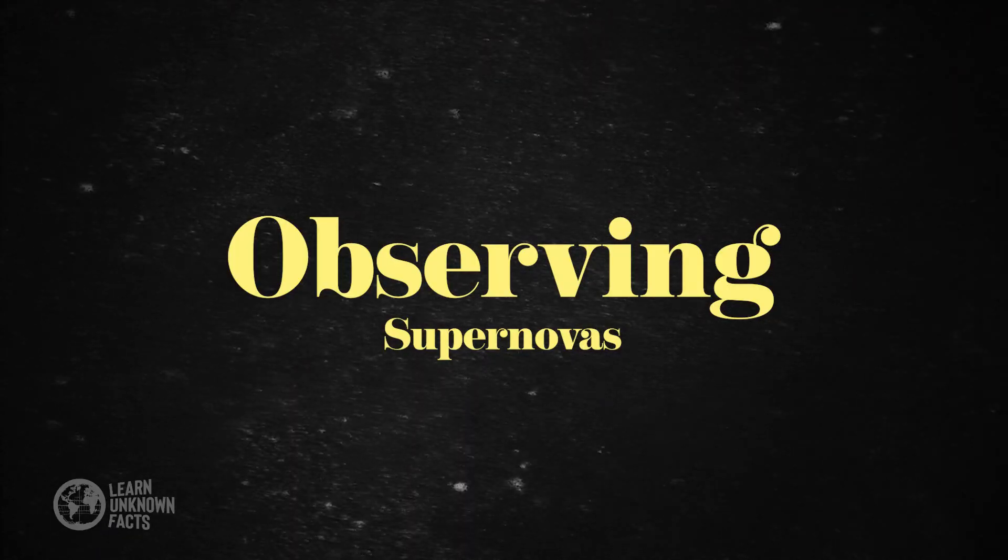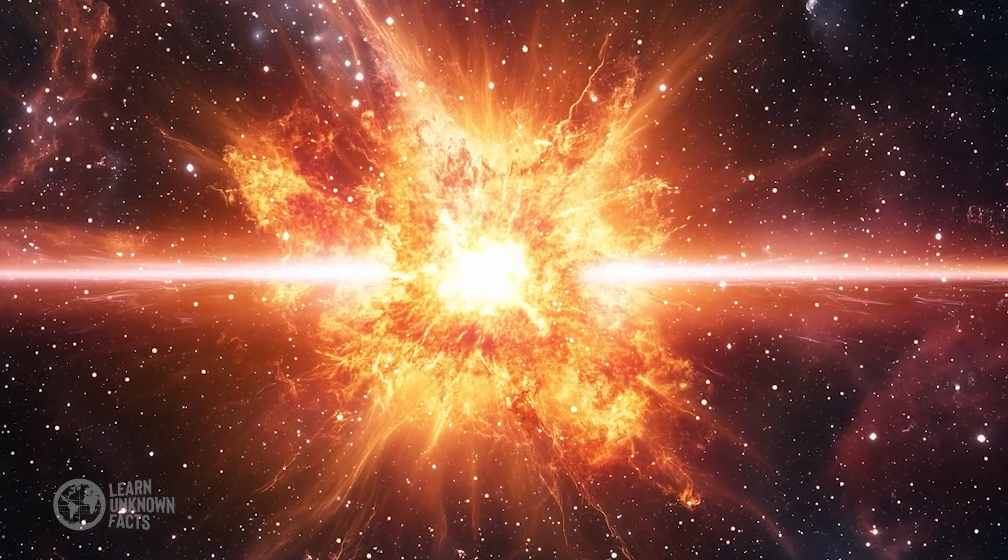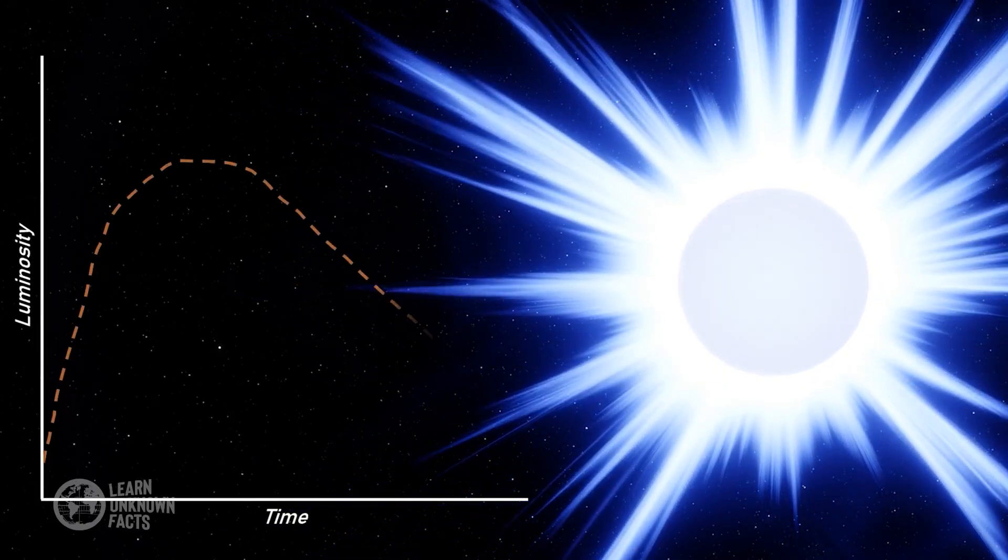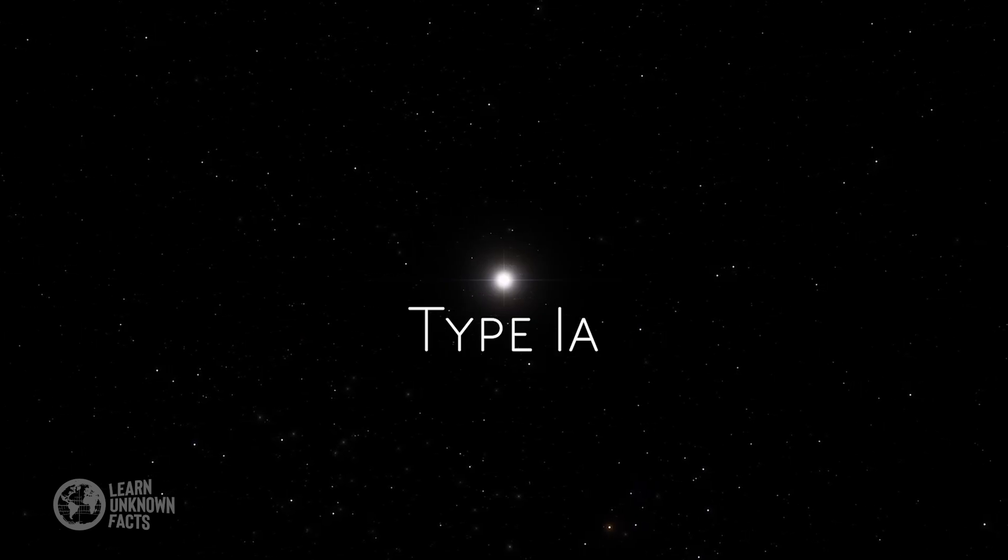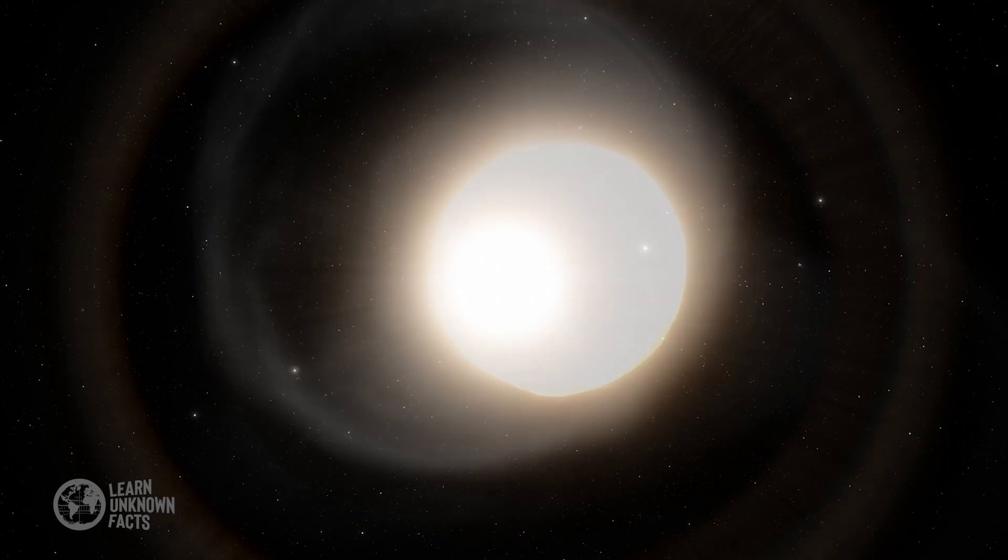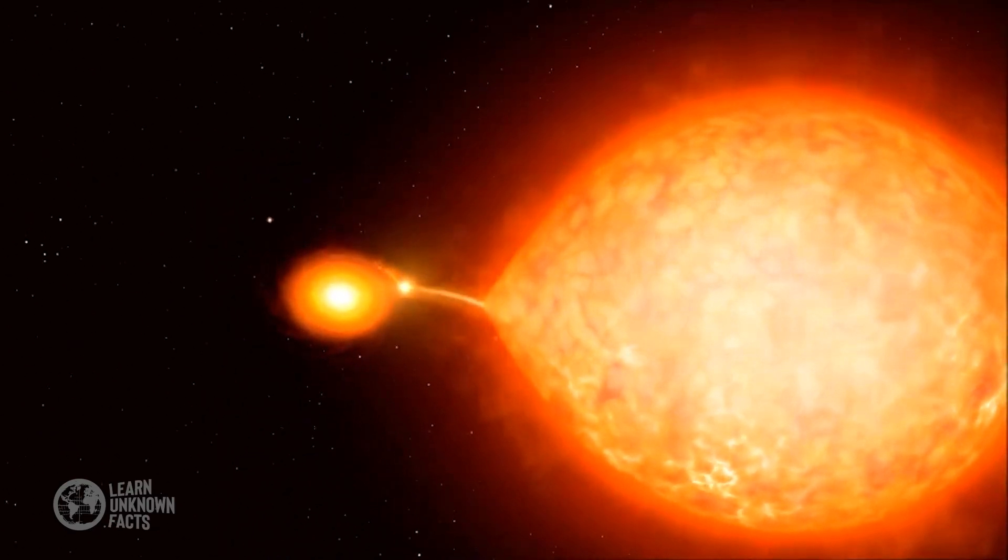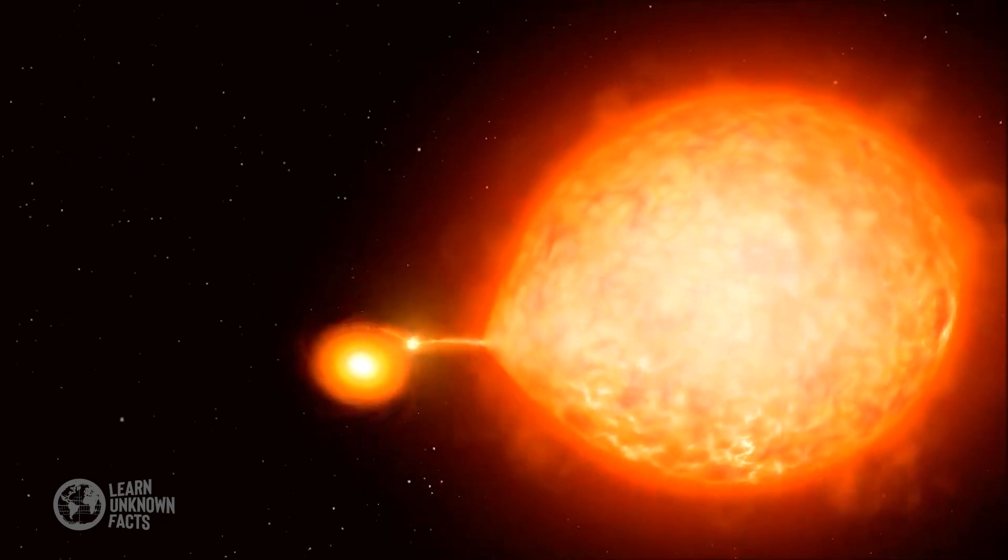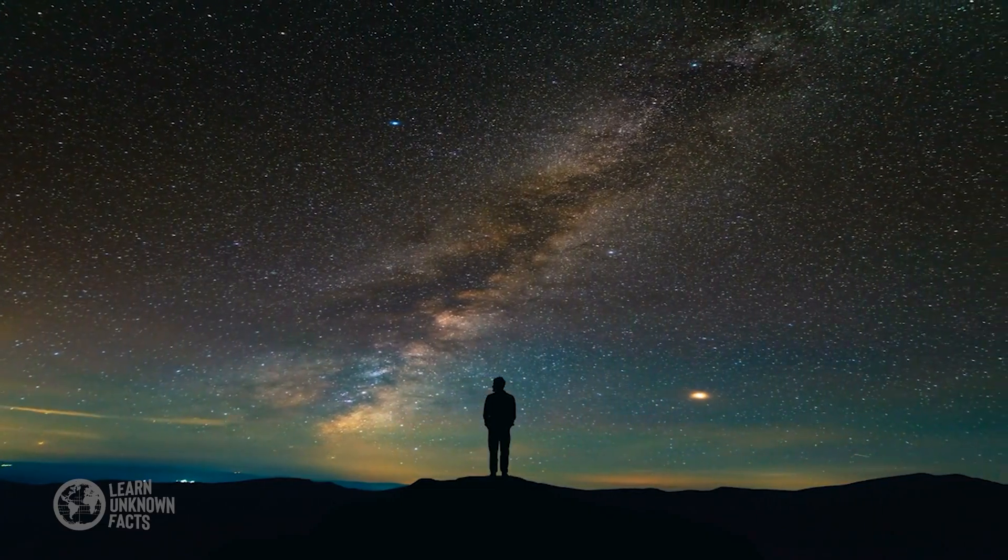Supernovas are not only fascinating phenomena, they are also important tools for astronomers. By studying the light curves and spectra of supernovas, scientists can gain insights into the universe's expansion and the nature of dark energy. Type Ia supernovas, in particular, are used as standard candles to measure astronomical distances. Because they have a consistent peak brightness, they allow astronomers to determine how far away galaxies are, contributing to our understanding of the universe's expansion rate.